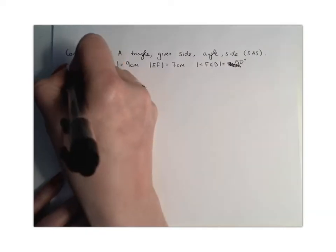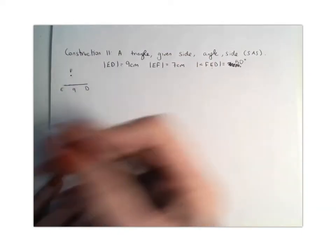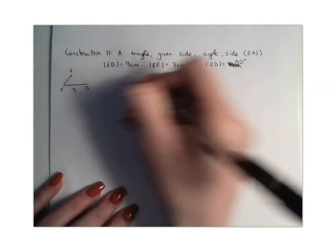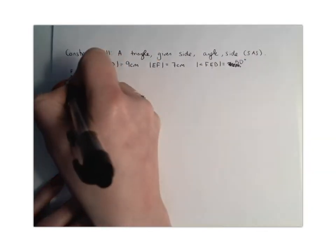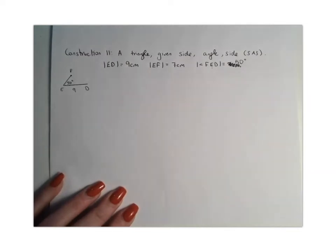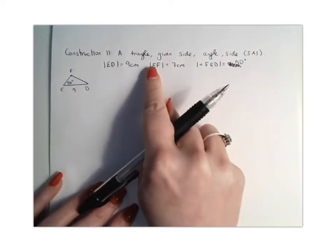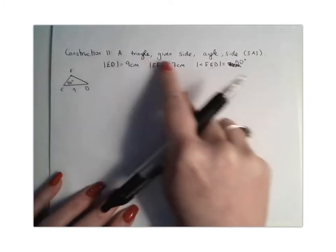So I'm going to place F there, again it might not actually be exactly in that position but roughly speaking. Our angle FED is 50, so I know the 50 degree angle needs to go in here and I can connect that up for my full triangle. EF, which is this side, is 7cm.